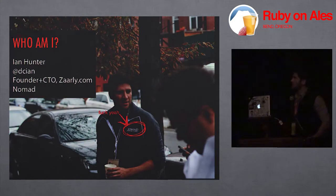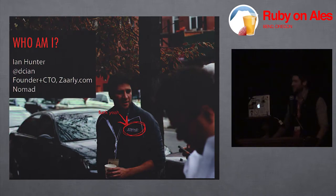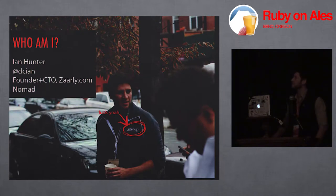I'm DCian on Twitter. I'm the founder and CTO of Xarly.com. I found this picture — I thought it worked really well because Nikazi is a local brewery and I really like it. I'm looking forward to tasting some of that. I'm also a nomad; I've lived in ten different places in the last year. I don't really have a home anymore — I'm just kind of circling around making friends with people who put me up.